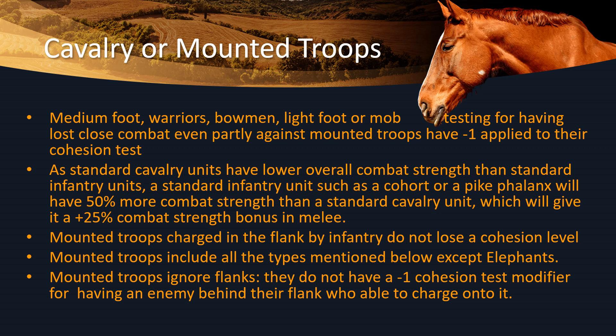Some characteristics of mounted troops are that medium foot, warriors, bowmen, light foot or mob testing for having lost close combat even partly against mounted troops have a minus applied to their cohesion tests — something you want applied when charging into the flank. Another feature of cavalry units is they're generally smaller than foot units, so foot units generally have a melee advantage of sheer numbers. However, mounted troops charged in the flank by infantry do not lose a cohesion level. Mounted troops also ignore flanks — they do not have a minus one cohesion test modifier for having an enemy behind their flank who is able to charge onto it, which infantry do.